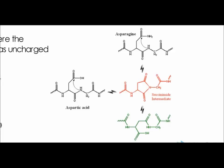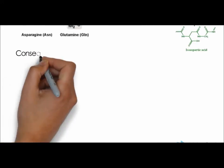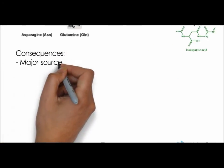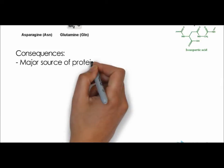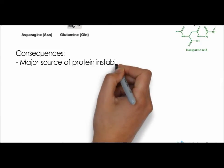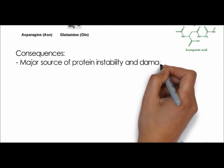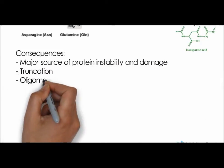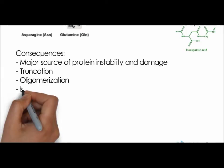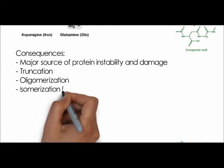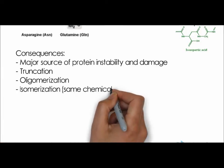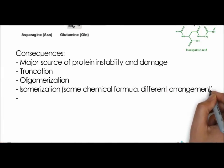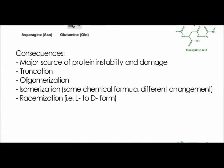Deamidation is a major source of protein instability and damage. It leads to truncation, oligomerization, isomerization — which is the same chemical formula but different arrangement — or racemization, which is the changing of an L-form to a D-form.